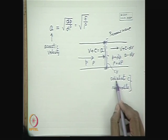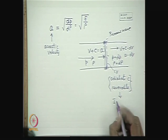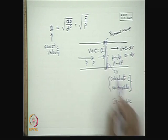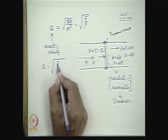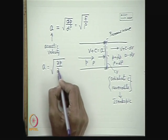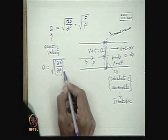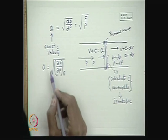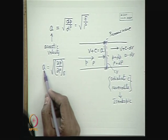Therefore, the changes are both adiabatic and reversible, the consequence of which is constant entropy — that is, the changes are isentropic. So the speed of sound should be written as the partial derivative of pressure with respect to density at constant entropy, which is the correct expression for the speed of propagation of the disturbance wave relative to the medium.